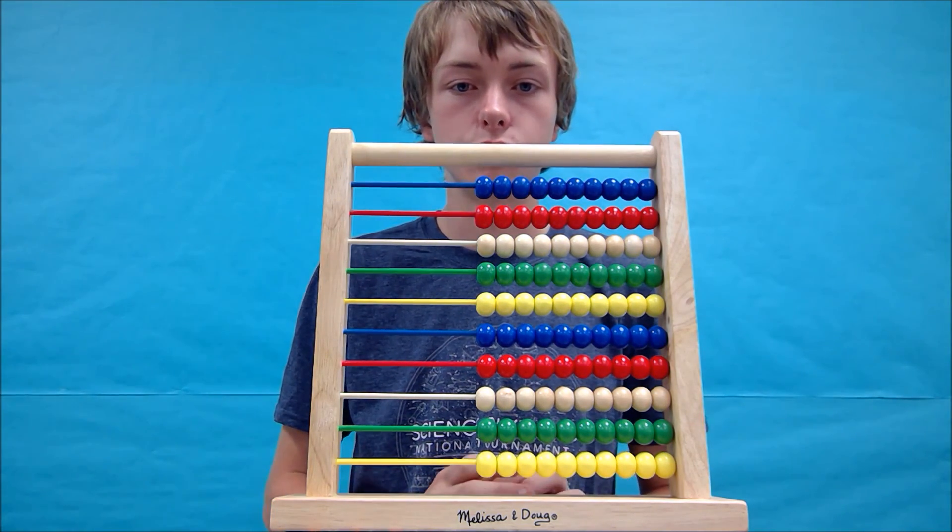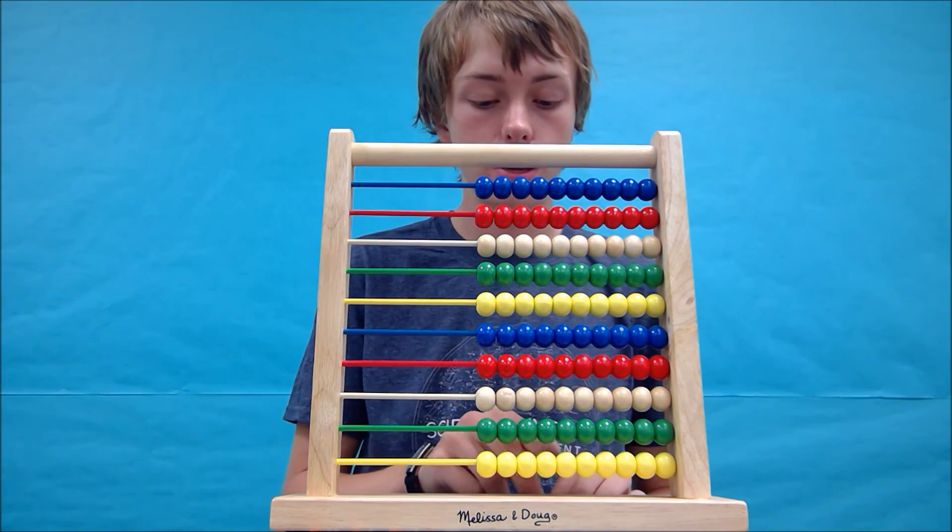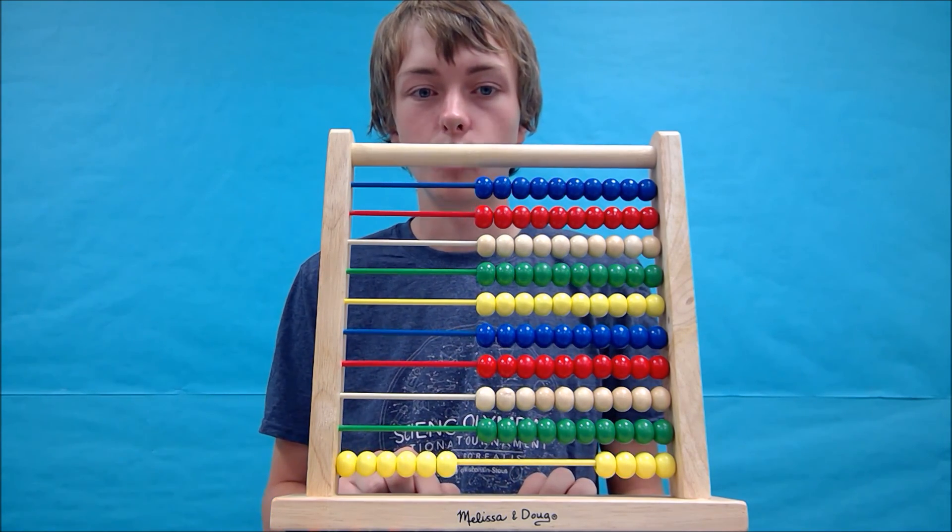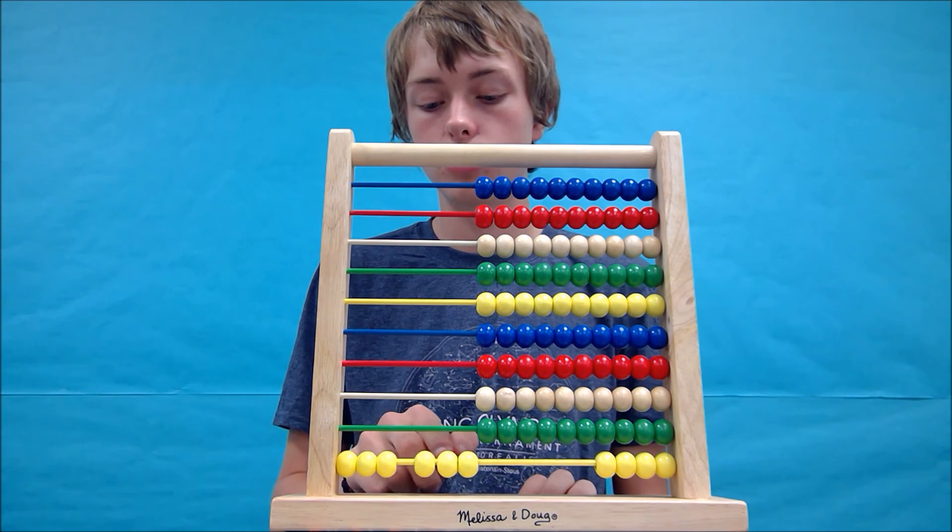Let's try 6 minus 4. Again, we'll start by forming the first number, 6. And we're going to take 4 beads away: 2, 4.